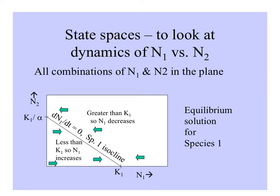We can use state spaces, which is a two-dimensional way to look at the dynamics of species interactions, N1 and N2. If the plane is all combinations of numbers of species 1 and numbers of species 2 — from 0 to many on the x-axis for species 1, 0 to many on the y-axis for species 2 — we can look at equilibrium solutions for population growth for species 1 using an isocline, which is on the species 1 axis at K1, and on the species 2 axis at K1 divided by alpha, the competition coefficient.